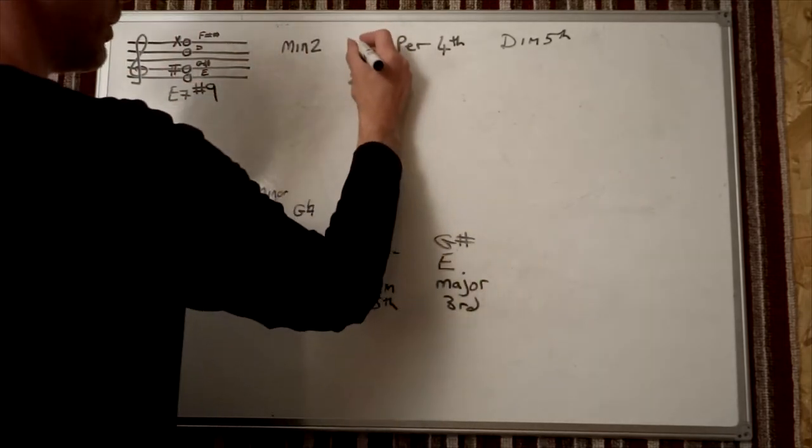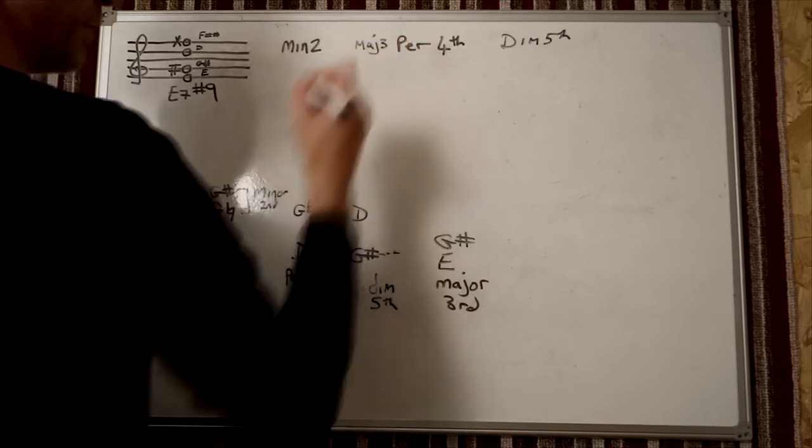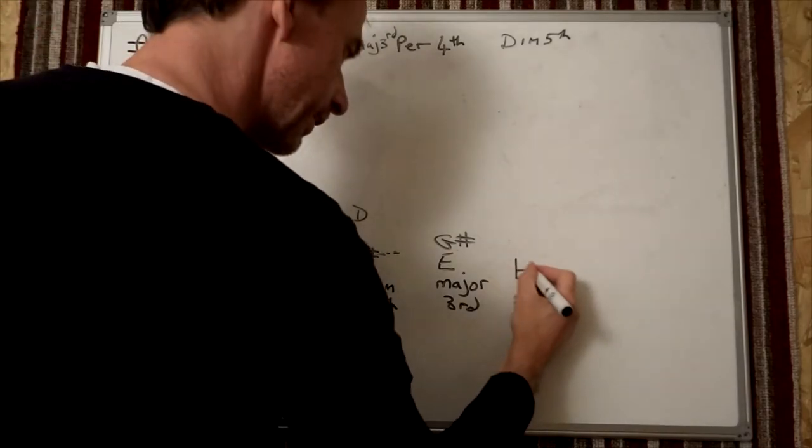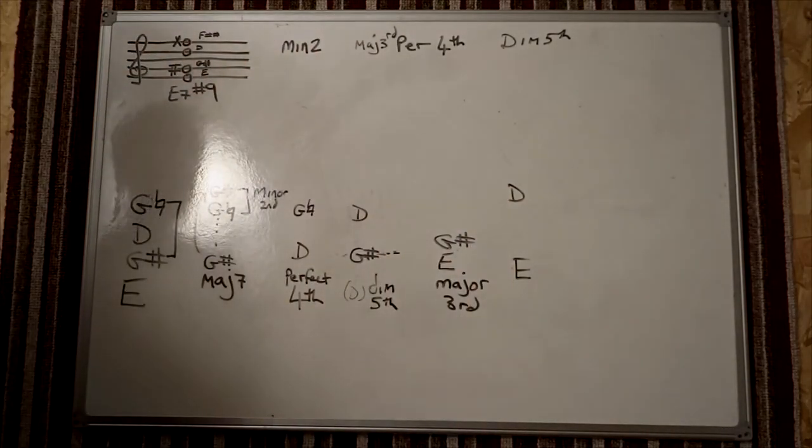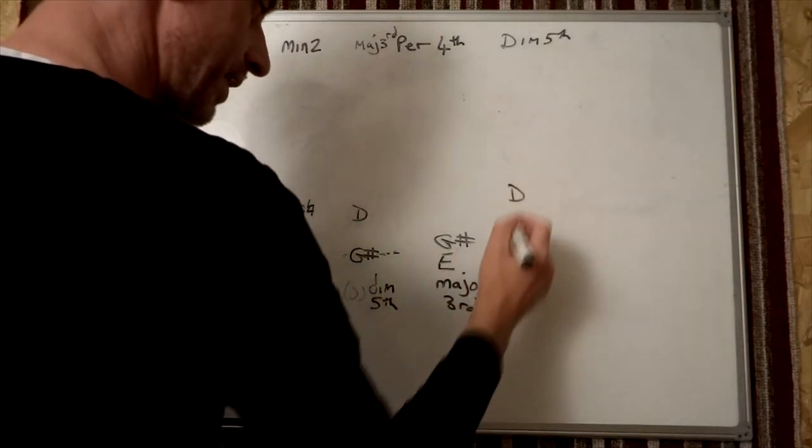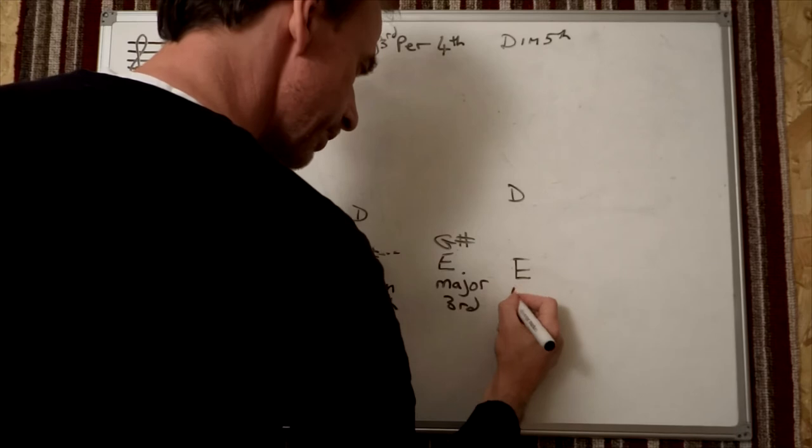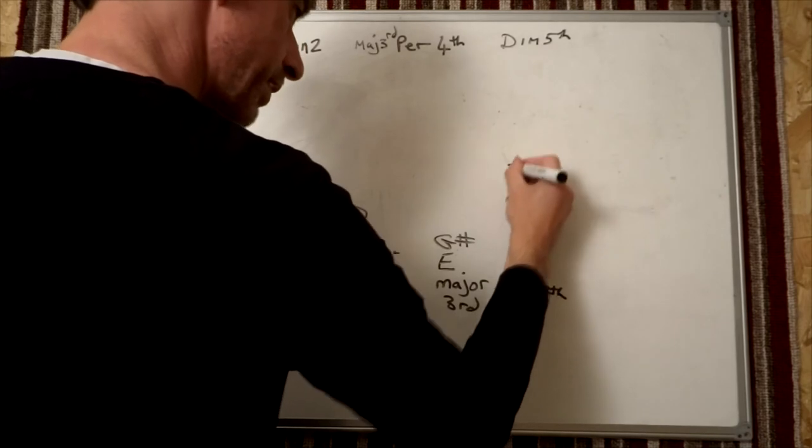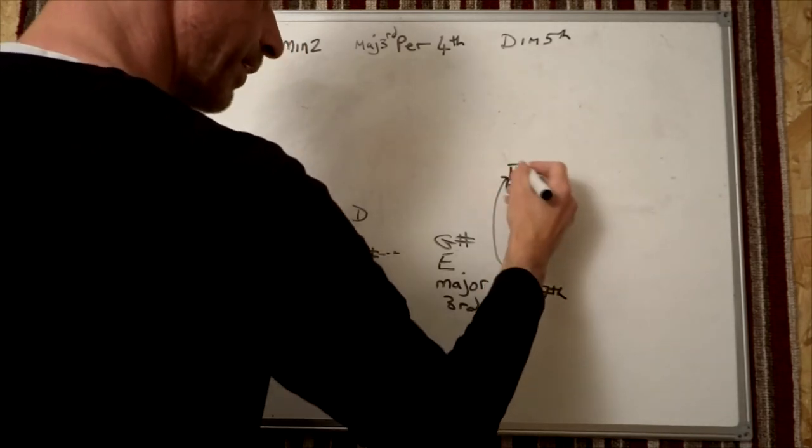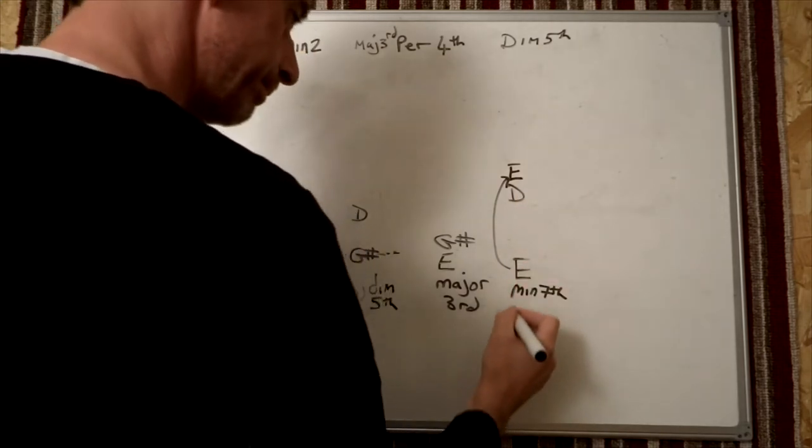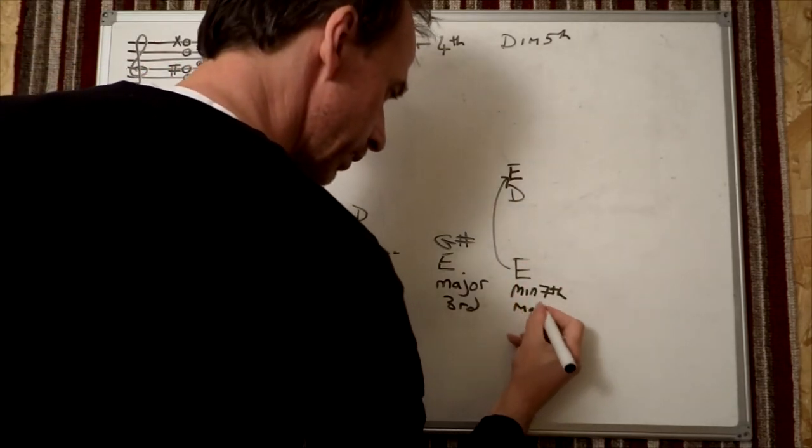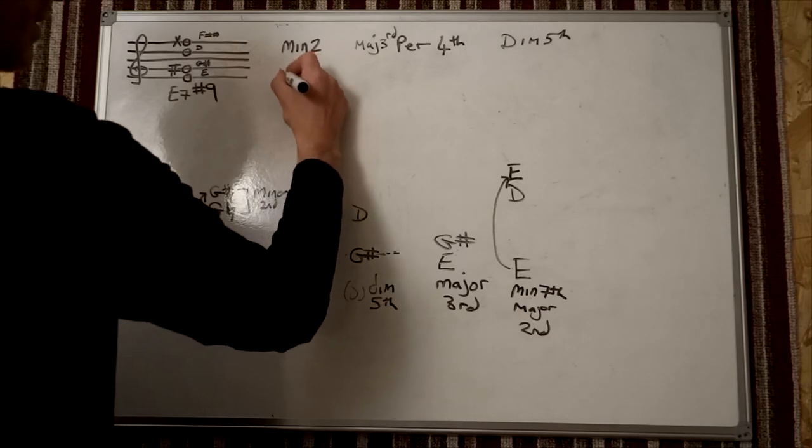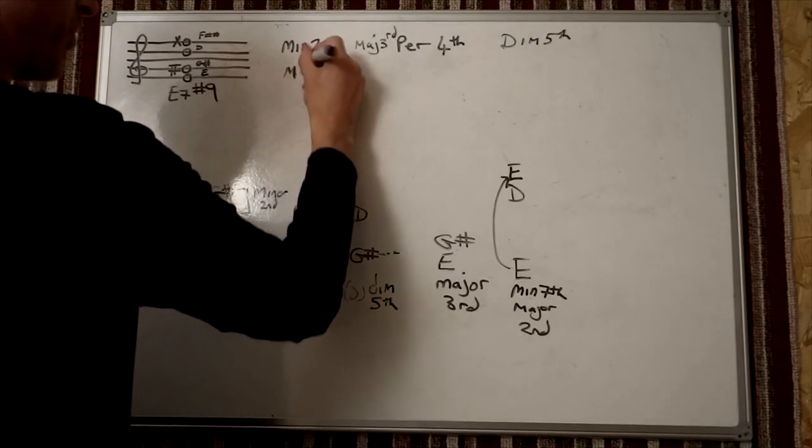And we've got our E to D. E to D normally is a minor seventh, but if you imagine that E going up the octave, the distance between these two is a major second. So we've got our minor second and our major second.